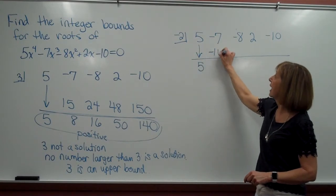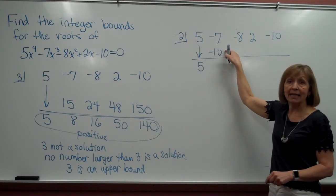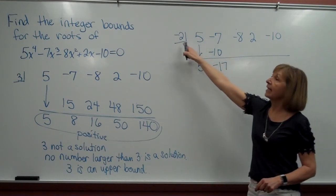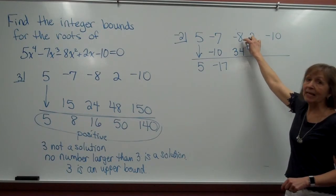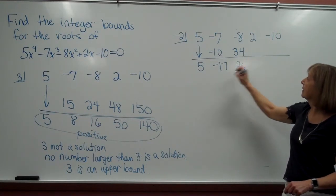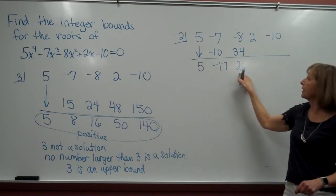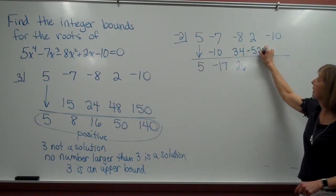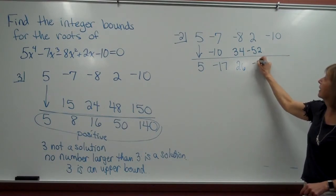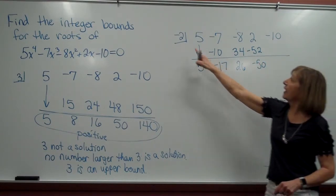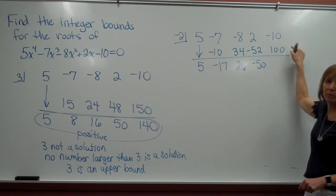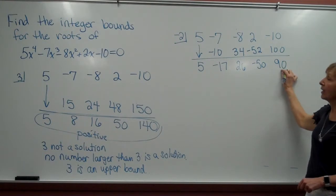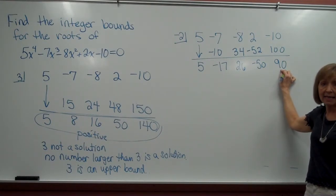Negative 2 times 5 is negative 10. Negative 7 plus negative 10 is negative 17. Negative 2 times negative 17 is a positive 34. And negative 8 plus 34 is 26. Negative 2 times 26 is a negative 52. 2 plus a negative 52 is a negative 50. And then negative 2 times negative 50 is positive 100. And negative 10 plus 100 is 90. So I didn't get a zero here, meaning that negative 2 is not a root of the polynomial equation.